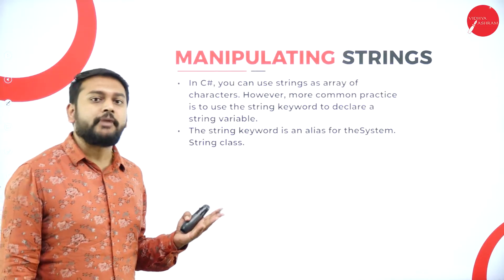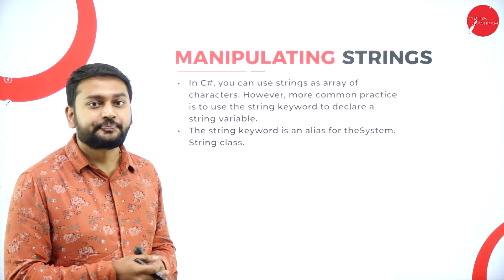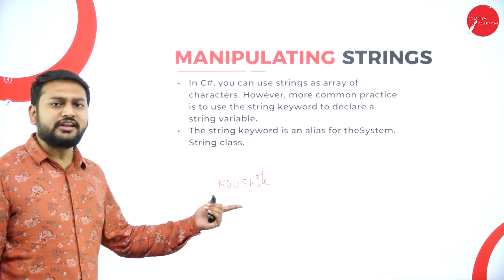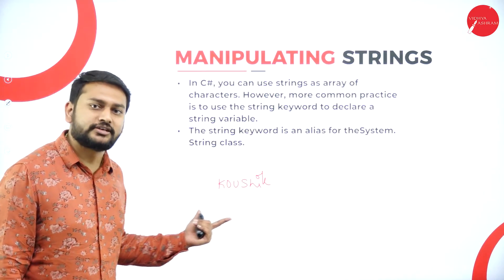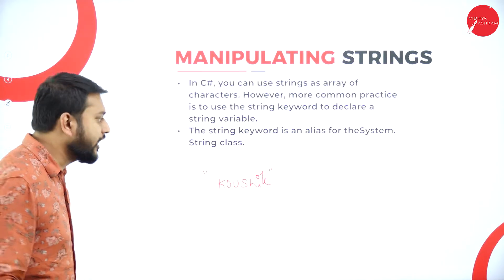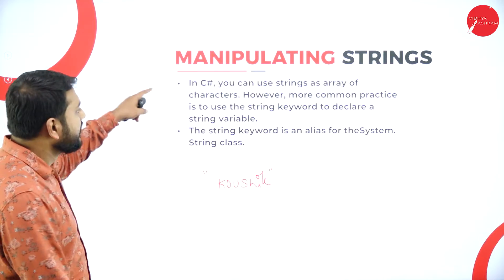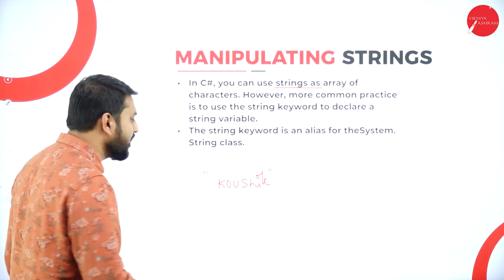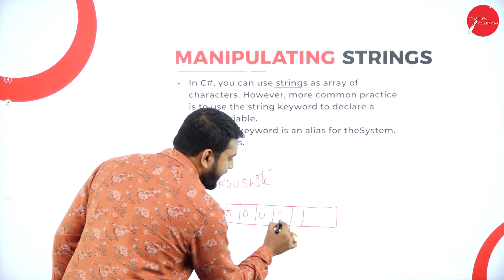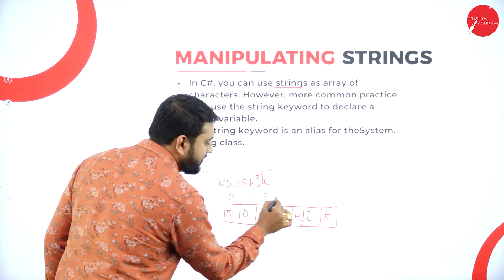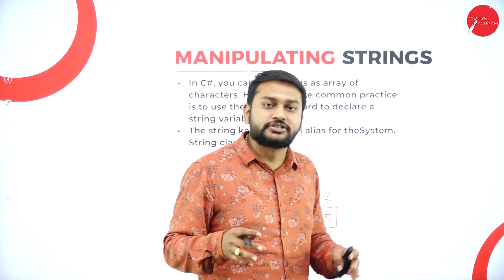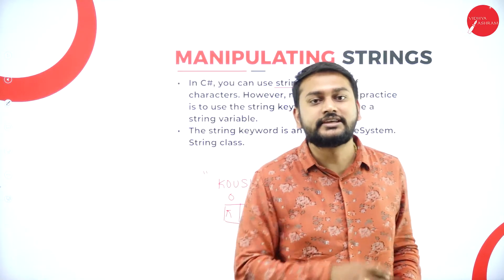The first topic is about manipulating strings — what exactly a string is. A string is a group of characters. For example, 'Kaushik' is a group of characters enclosed between quotes, and that is what we call a string. In C#, you can use a string as an array of characters — so k, o, u, s, h, i, k stored in an array is also treated as a string.